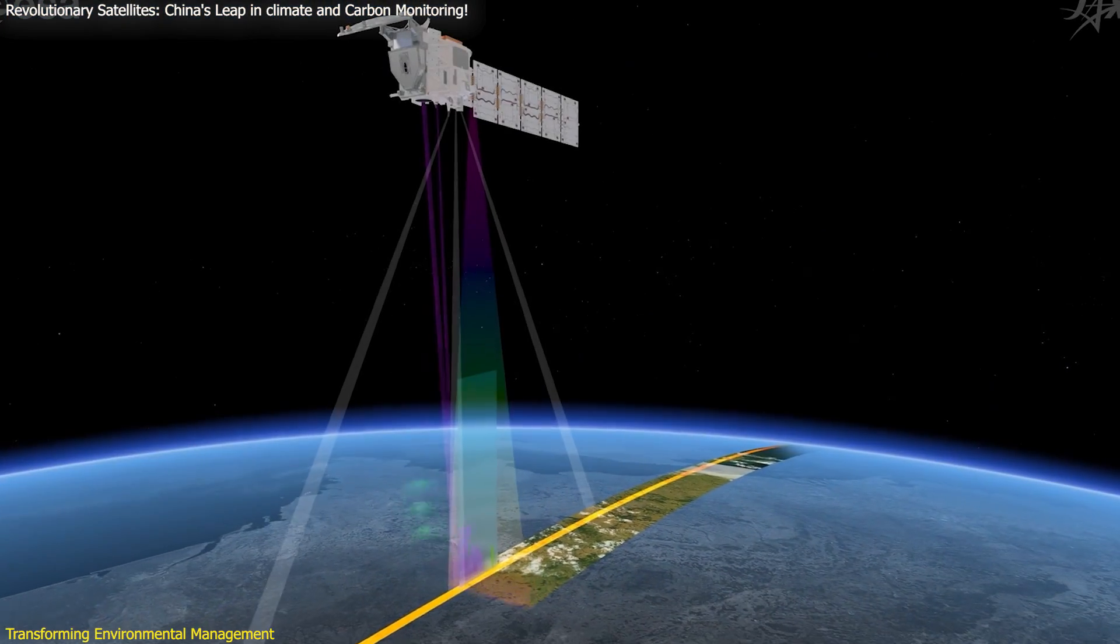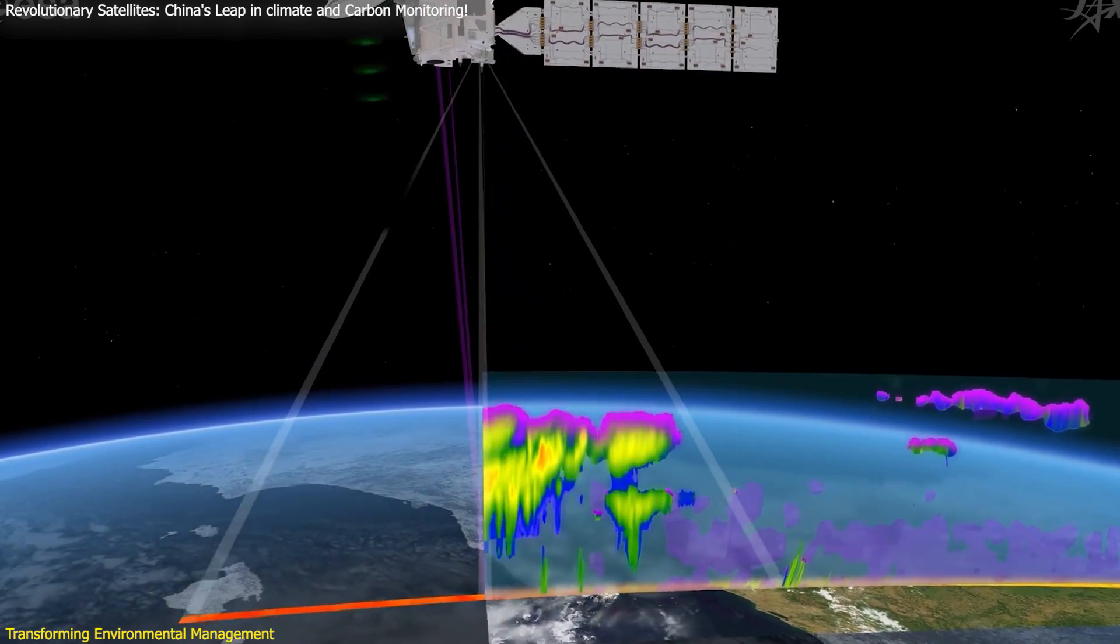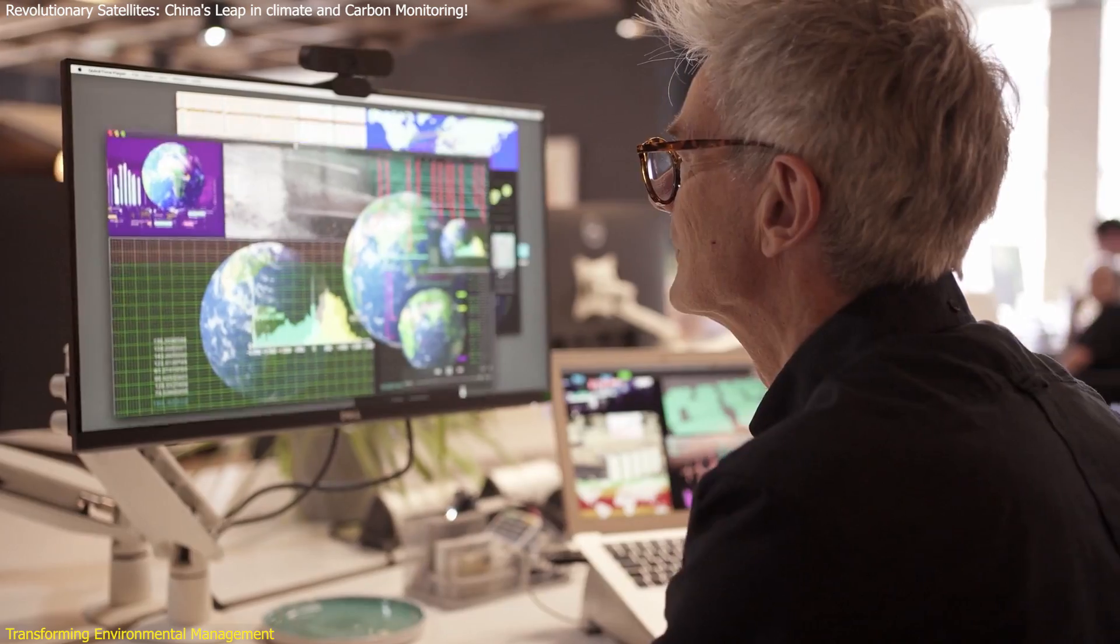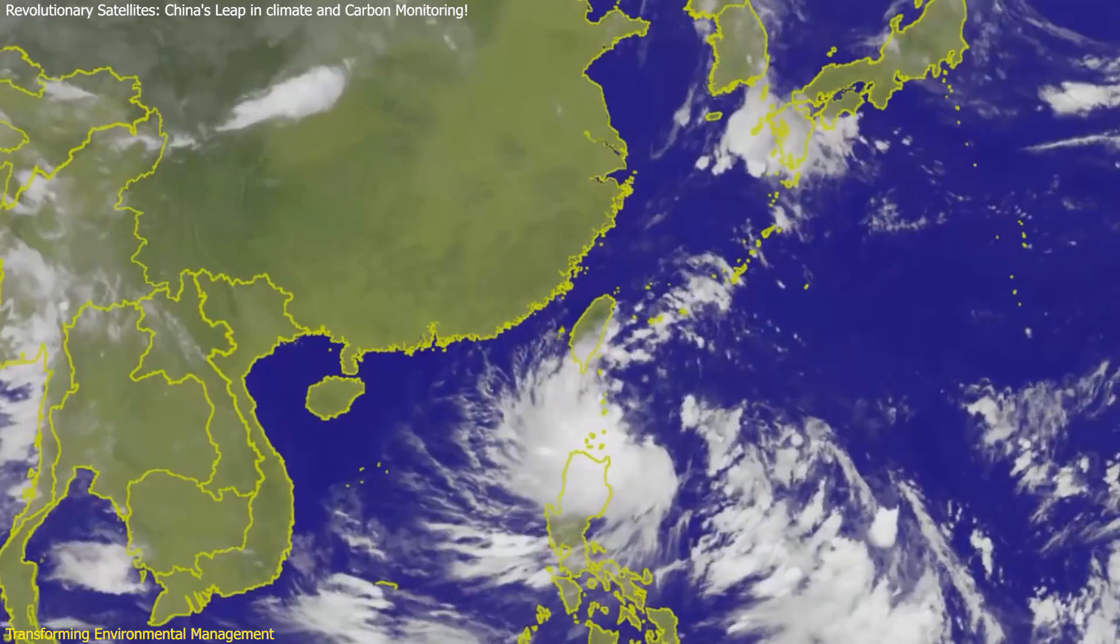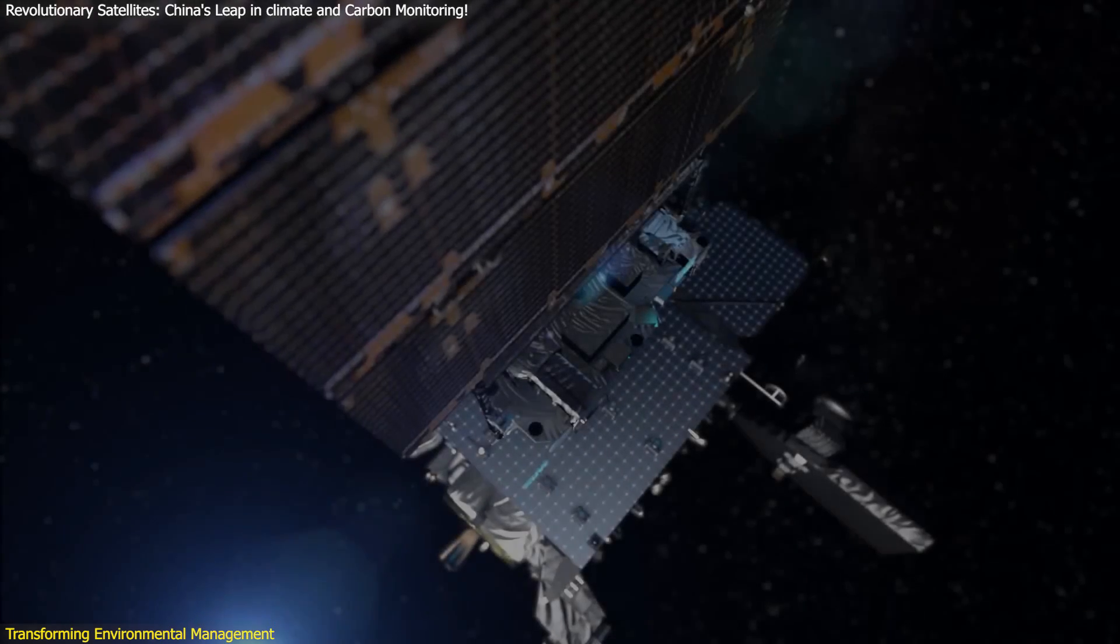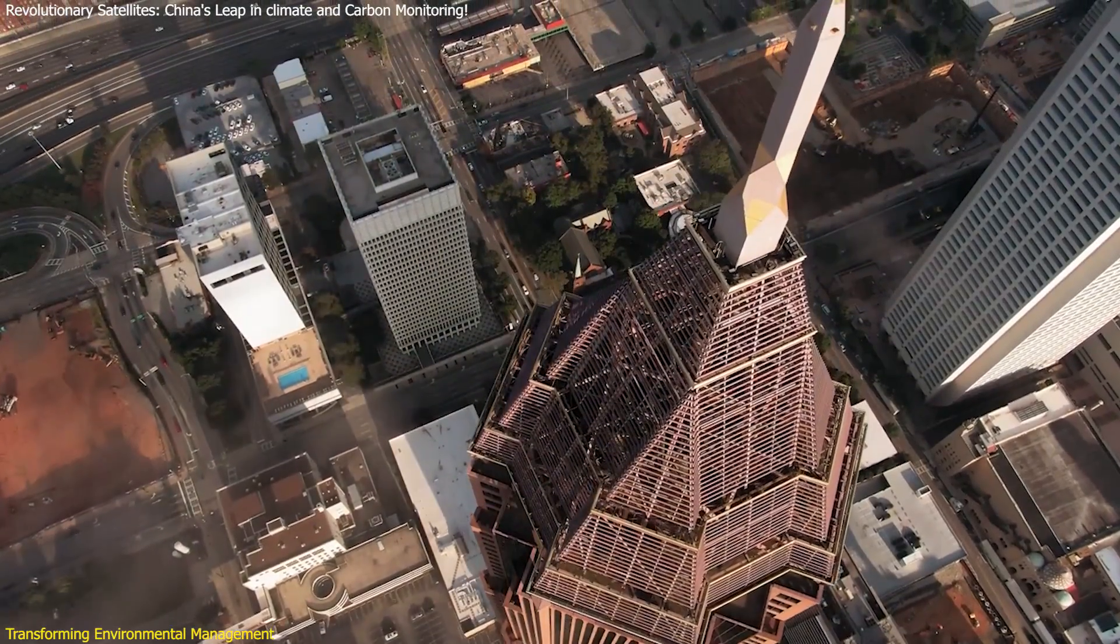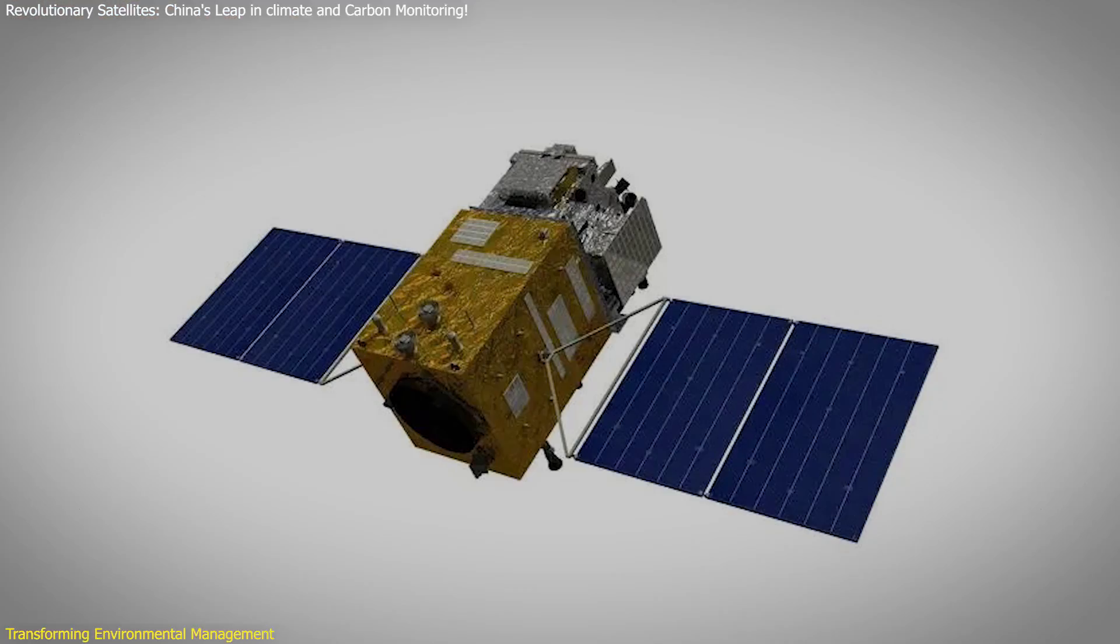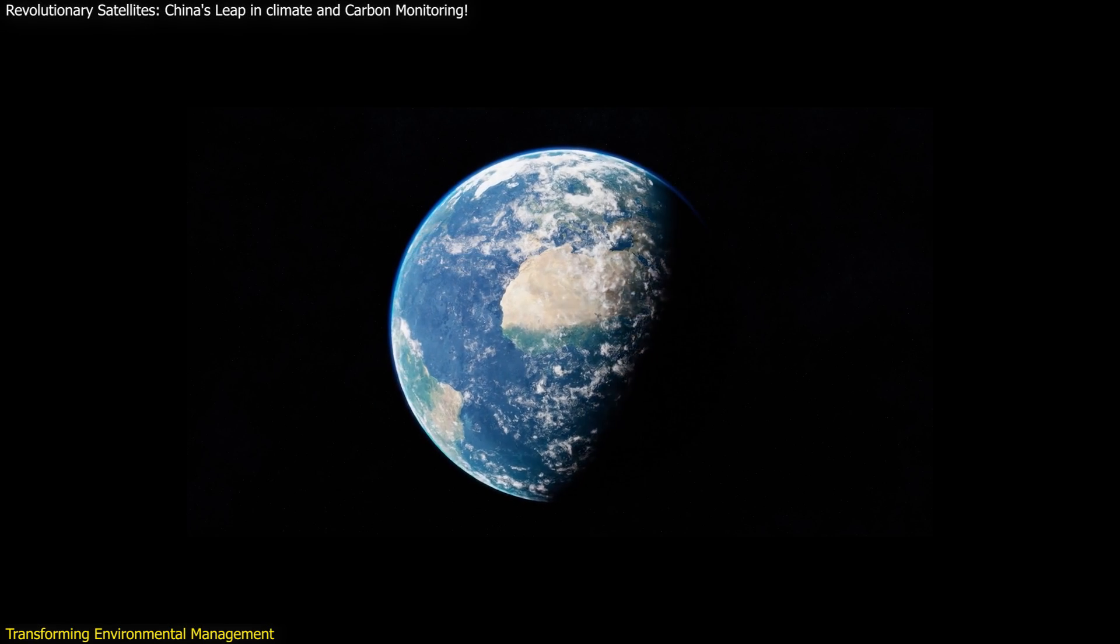Moreover, the data collected by these satellites can support long-term environmental research. Scientists can use this information to study climate trends, biodiversity changes, and the impact of human activities on natural ecosystems. This research is essential for developing strategies to mitigate the adverse effects of climate change and ensure the sustainability of our planet's resources. China's advanced satellites are not only pivotal in monitoring and managing environmental conditions, but also play a vital role in enhancing urban planning, disaster response, and scientific research. Their comprehensive data collection capabilities make them indispensable tools in our efforts to create a more sustainable and resilient world.